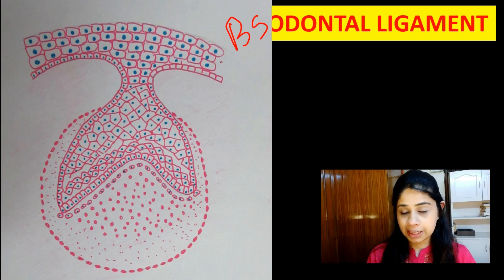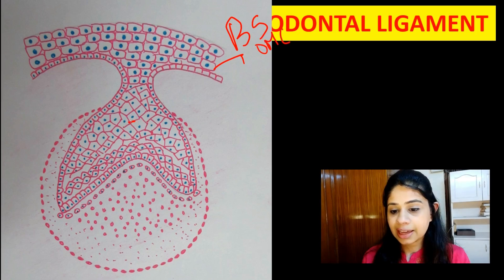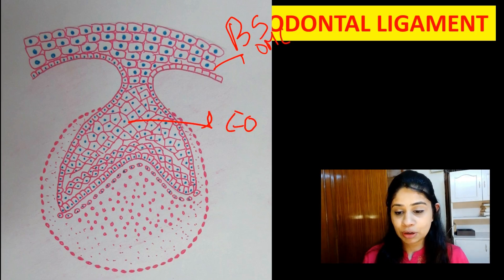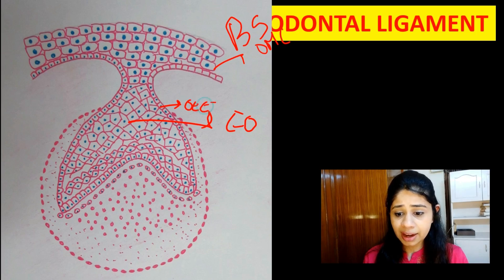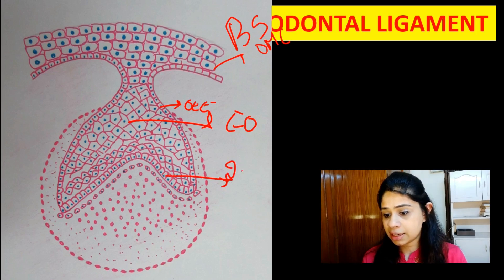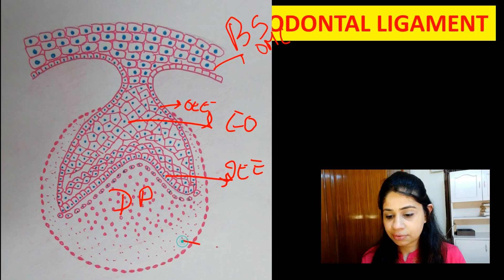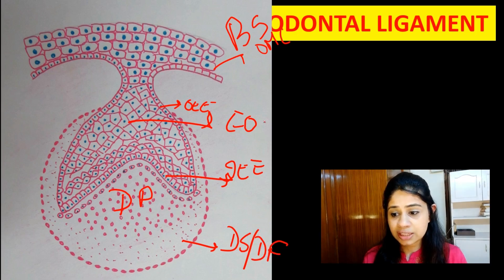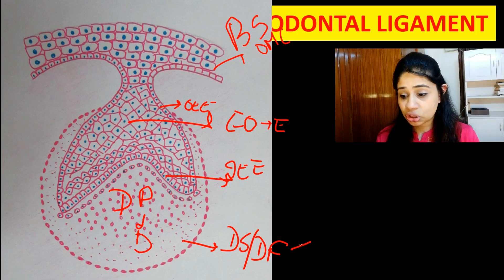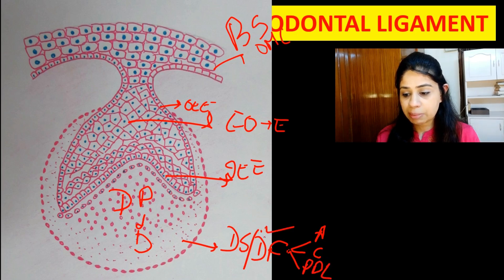In the bell stage we see various layers: the outermost layer of oral mucosal cells, the enamel organ with the outer enamel epithelium and inner enamel epithelium, the dental papilla, and surrounding the dental papilla, the dental sac or dental follicle. The enamel organ gives rise to enamel, the dental papilla gives rise to dentine, and the dental follicle gives rise to three major tissues: the alveolar bone, cementum, and the periodontal ligament.